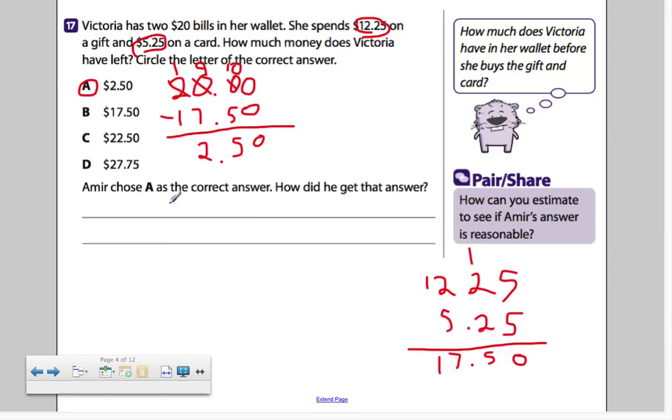Amir chose A as the correct answer. How did you get that answer? Well, let's write this in your own words, okay? Amir chose A and we chose A. So Amir did the same thing that we did, which was correct. So all you have to do is explain, what did we do? Well, first, we added up the 12.25 and the 5.25. We got 17.50. Next, we subtracted that from $20. That's how we got 250.